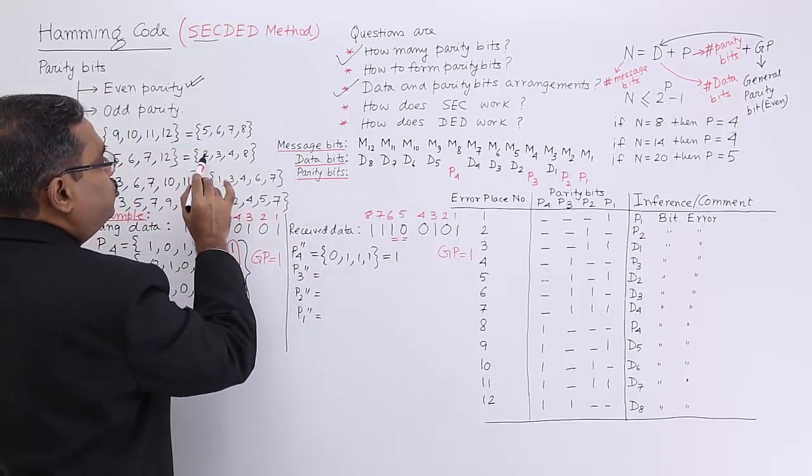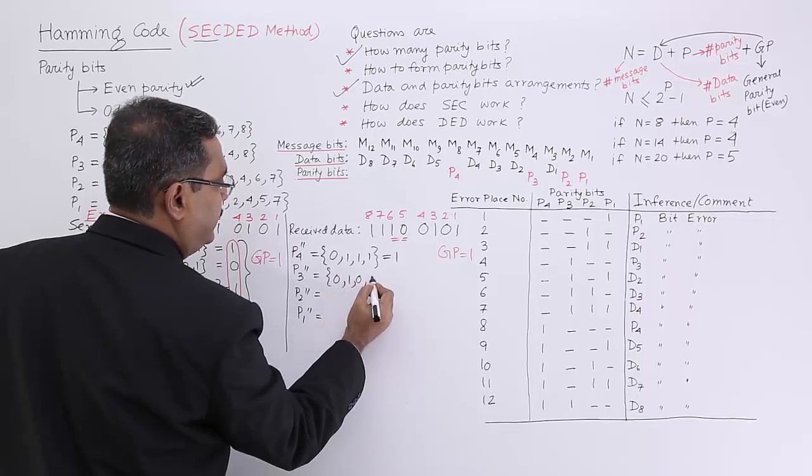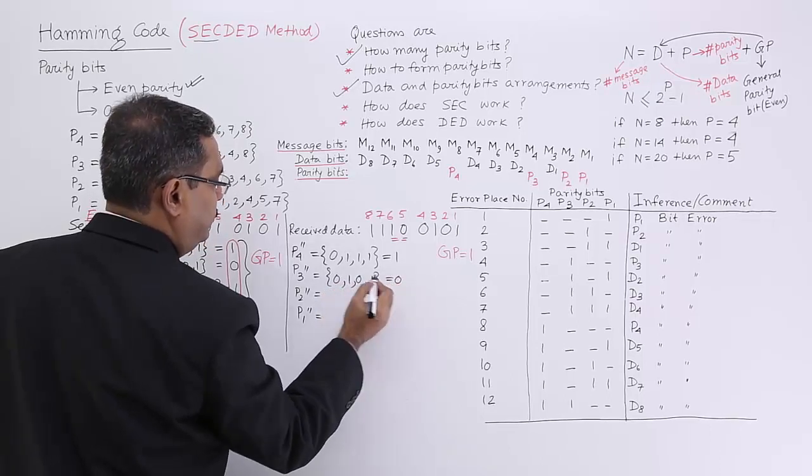P3: 2, 3, 4, 8. So it will be 2, 3, 4, 8, so it will be 0.